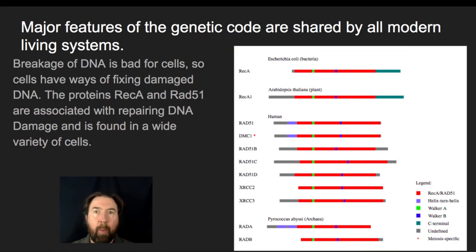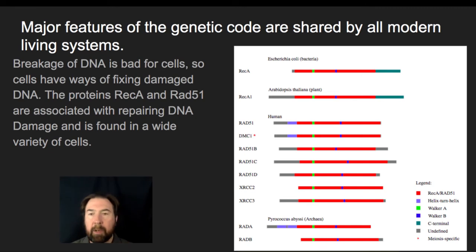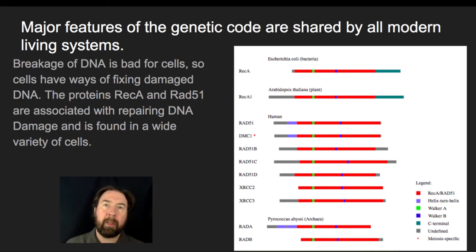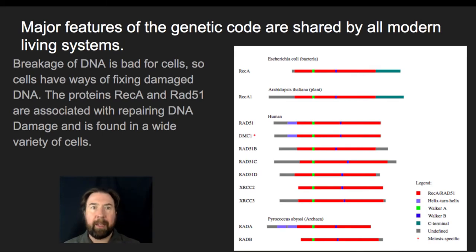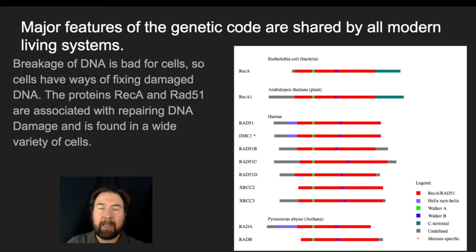When you find a struggle that all living things have to come up against — and that was probably a key thing for those early cells to survive — it's going to be conserved throughout time. When we see conserved sequences of code, that's again evidence of modern living things descended from a common ancestor.